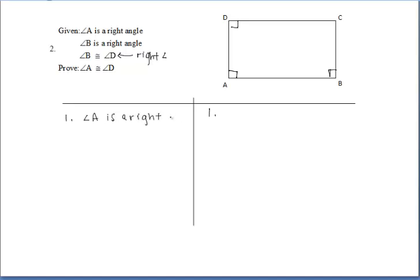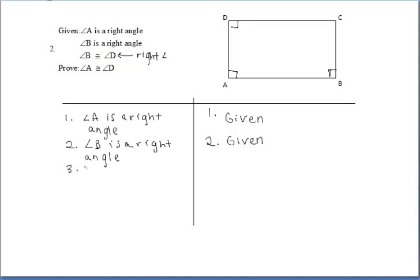So let's go ahead and write down our first given: angle A is a right angle — because it's given. Secondly, we're given that angle B is also a right angle — it's given. We want to prove angle A congruent to angle D in the end. So I'm going to write the next given: angle B is congruent to angle D — and we know that because it's given.